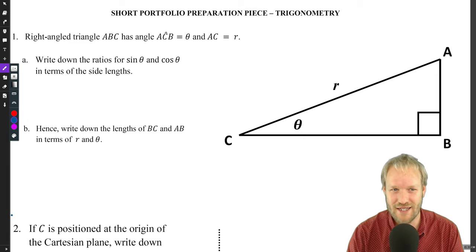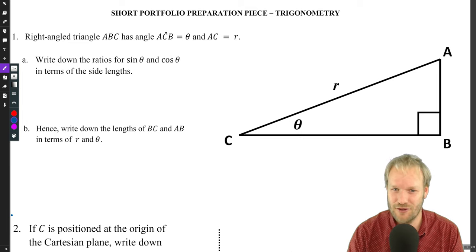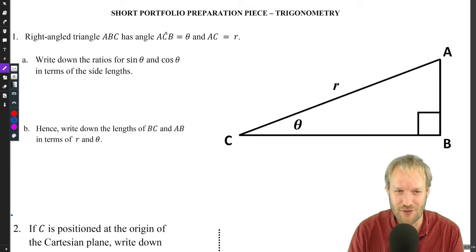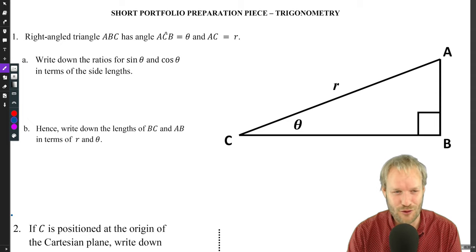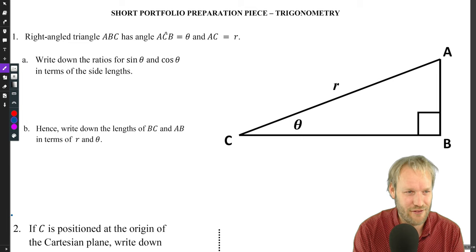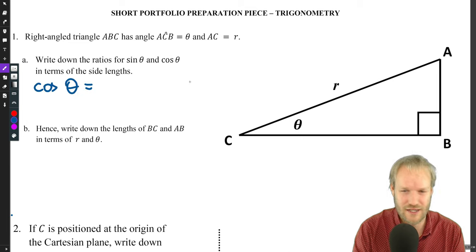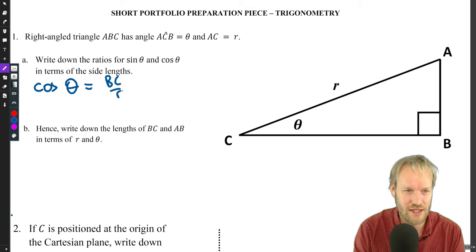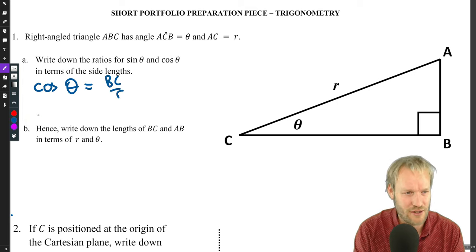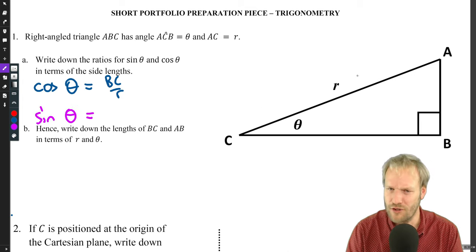Right angle triangle ABC has angle ACB equals theta and AC equals R. It says write down the ratios of sine theta and cos theta in terms of the side lengths. Nothing too exciting or new here, so go for it. Cos theta is adjacent over hypotenuse, so that's BC over R.